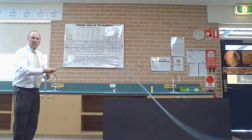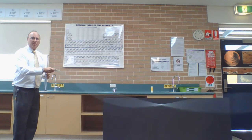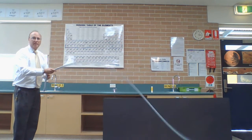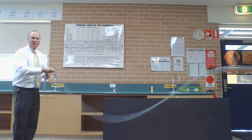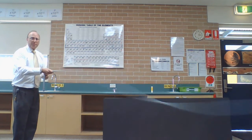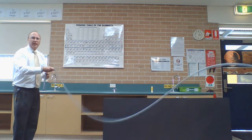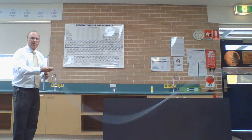Places where it's going very fast, from high and low, we call those anti-nodes. There are two anti-nodes here and three nodes, including my hand. Although my hand is giving a bit of energy, but not a lot, to keep the standing wave going.